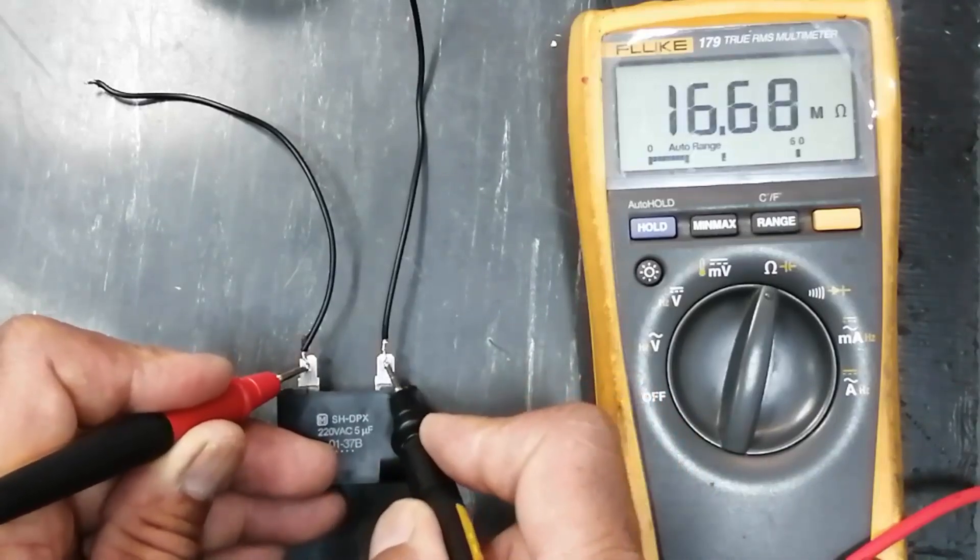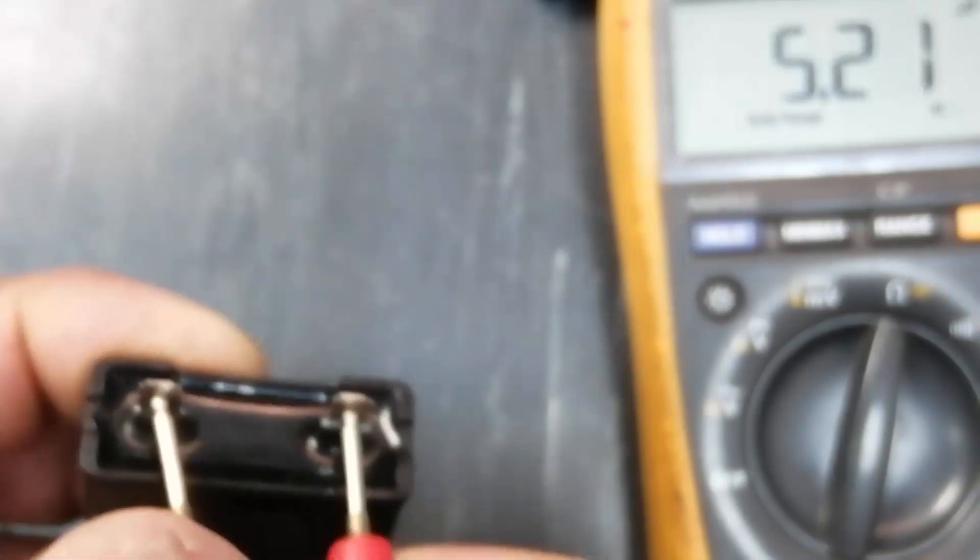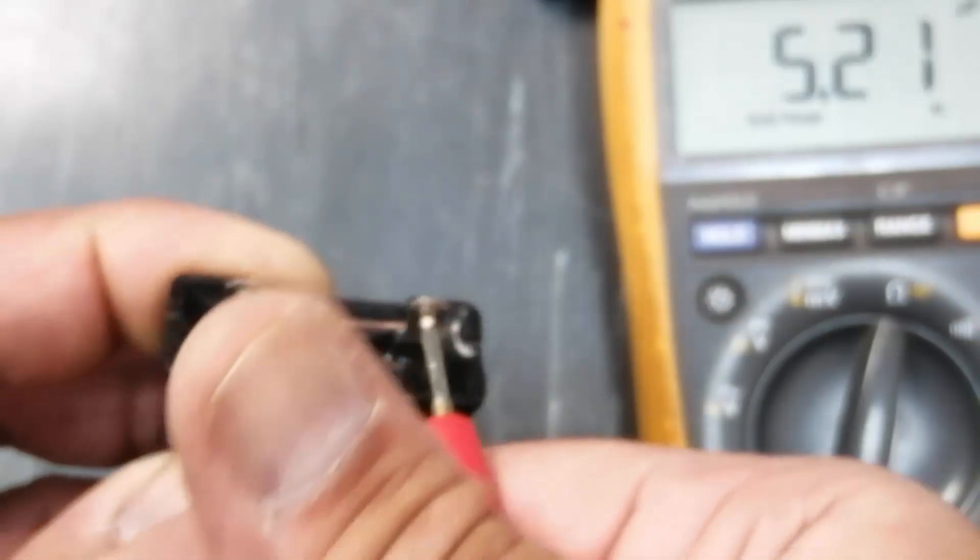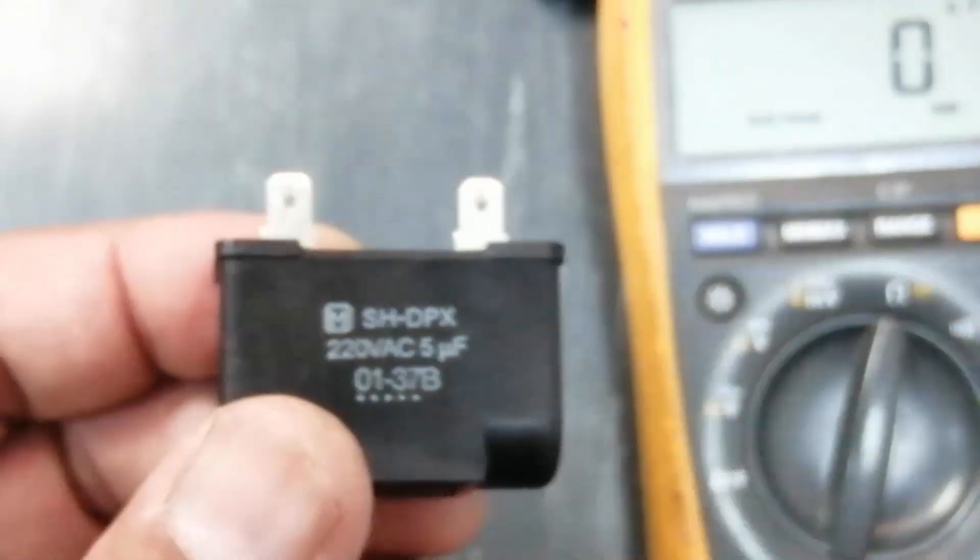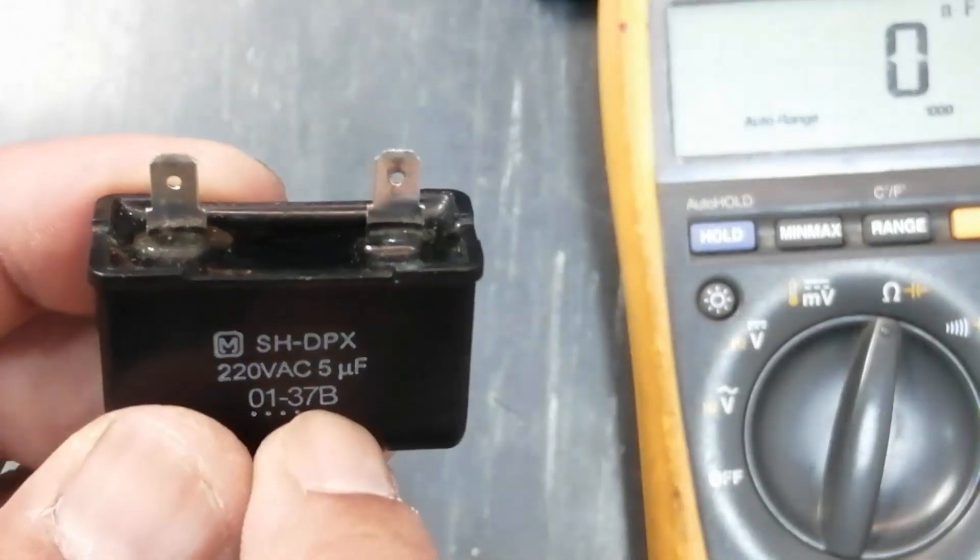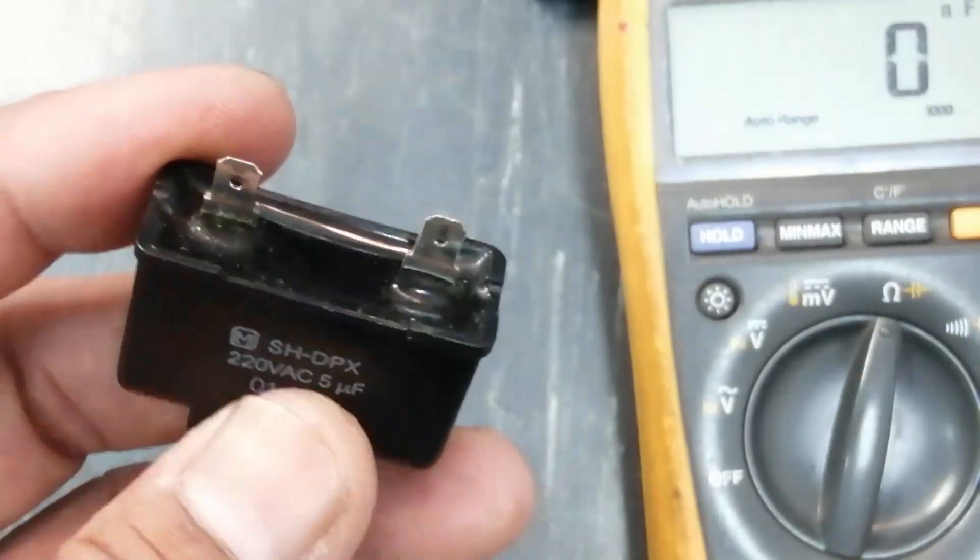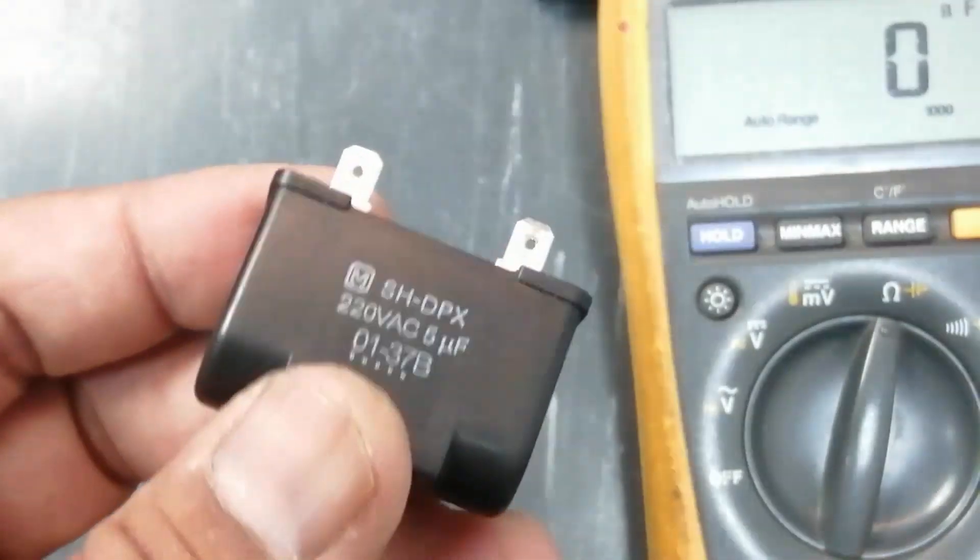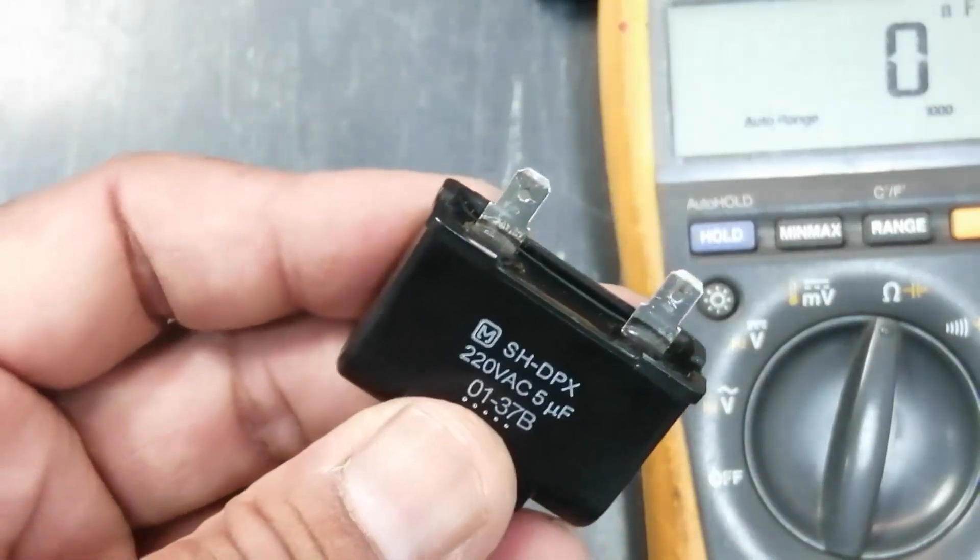Five point two microfarad—so this is good because it is plus or minus five percent. This is a very good capacitor. So five percent tolerance means 5.25 or 4.75, that is acceptable. Thanks for watching. Assalamualaikum warahmatullahi wabarakatuh.